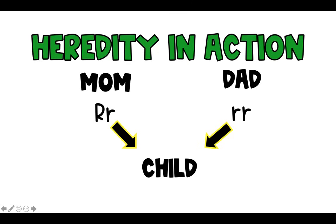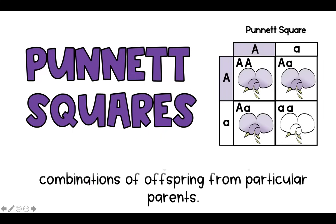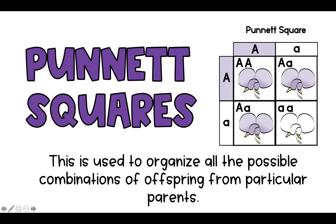That's where a Punnett square comes into play. We use it to predict how all four genes can combine and what is the likelihood that a child will be born with certain characteristics. A Punnett square organizes all the possible combinations of offspring from particular parents and shows us the likelihood of each outcome.